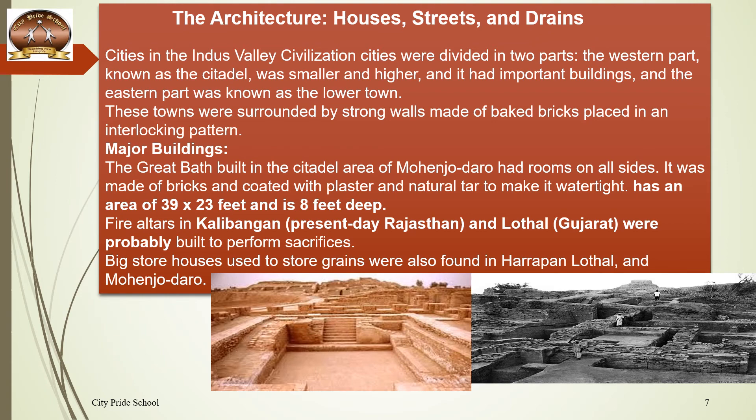As we move on with architecture, these cities of the Indus Valley Civilization were generally divided into two different parts. One part was in the western side and that was known as the citadel — comparatively a smaller area but located on higher ground. The other was the eastern part, known as the lower town. The citadel was at a greater height than the lower town, and the lower town was inhabited by the common people.